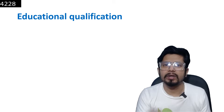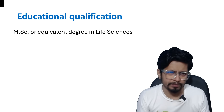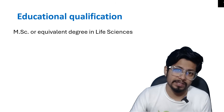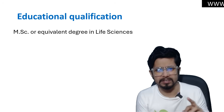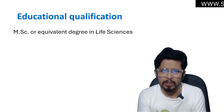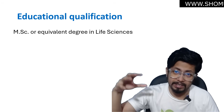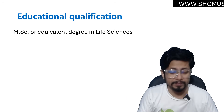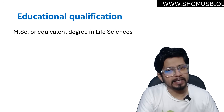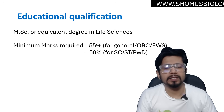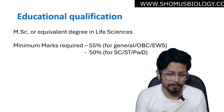For educational qualifications, those eligible are candidates with an MSc or equivalent degree in life sciences — including biochemistry, microbiology, cell biology, genetics, physiology, botany, zoology, and biotechnology. Candidates currently in the final semester of their MSc in a result-awaited category can still apply. Minimum marks required are 55% for general, OBC, and EWS categories, and 50% for SC, ST, and PWD categories.